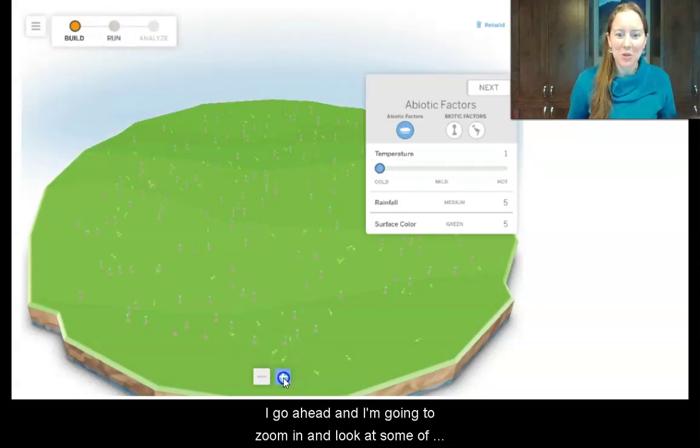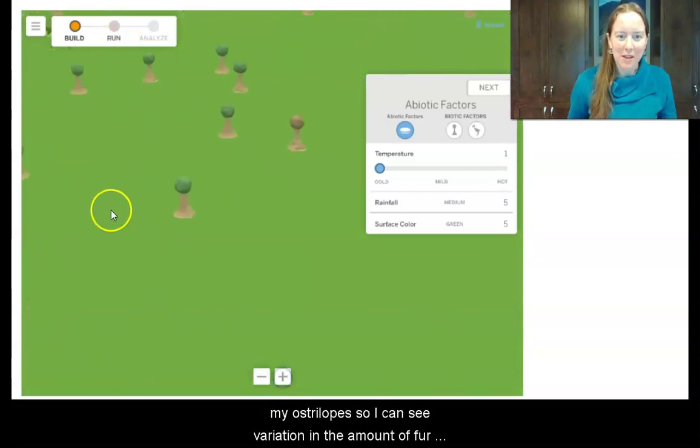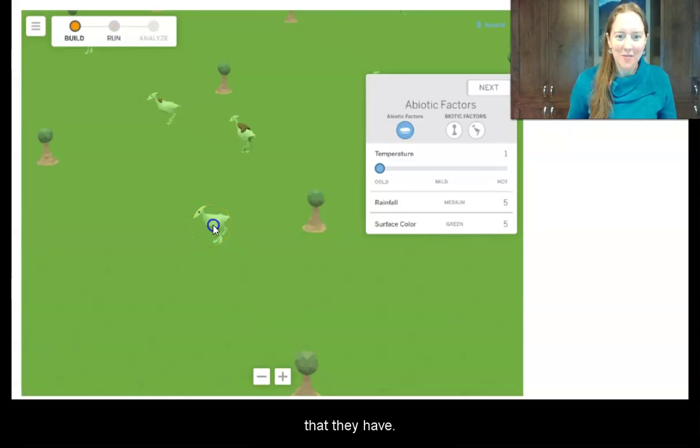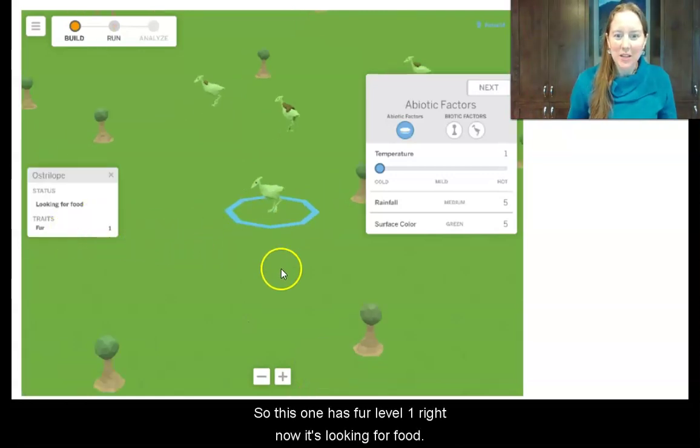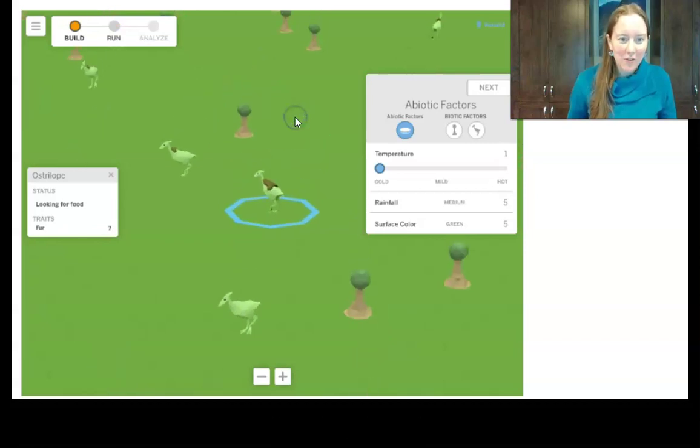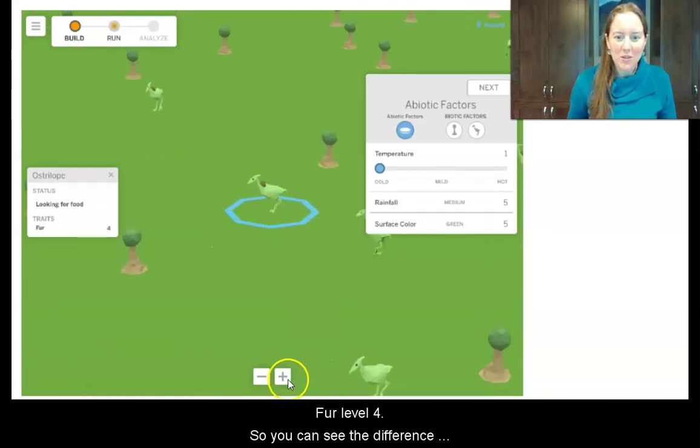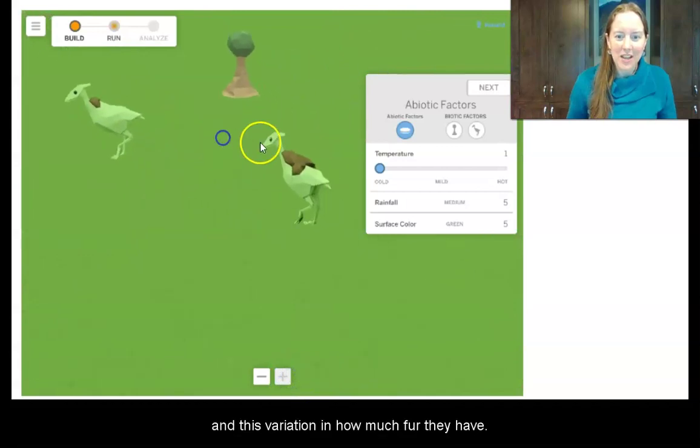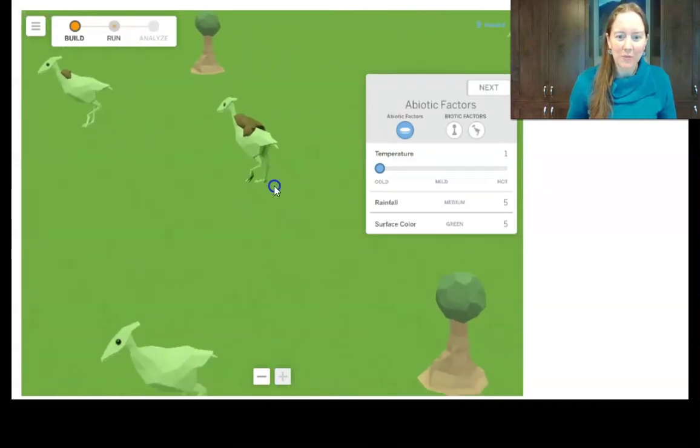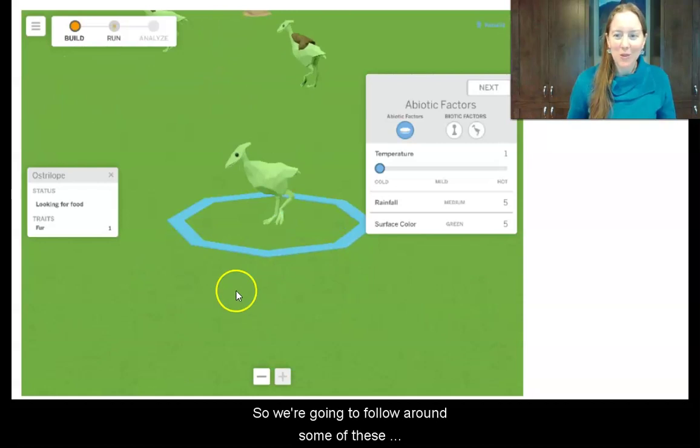So I'm going to zoom in and look at some of my Australopes. So I can see variation in the amount of fur that they have. So this one has fur level 1. Right now it's looking for food. Here we've got fur level 7, fur level 4. So you can see the difference, right? This variation in how much fur they have. So we're going to follow around one of these Australopes and see what happens over time.